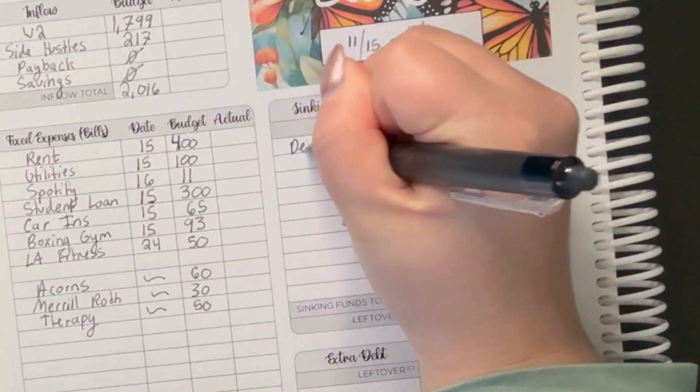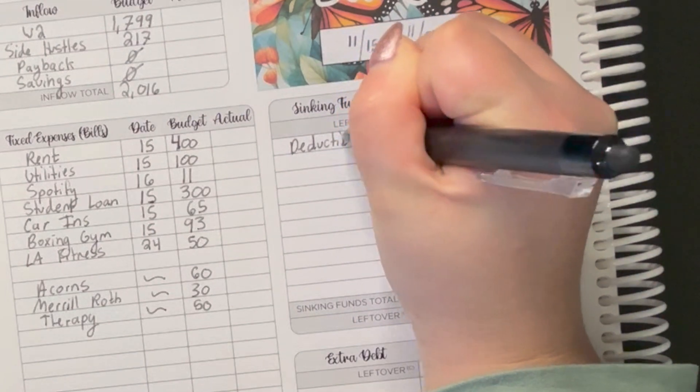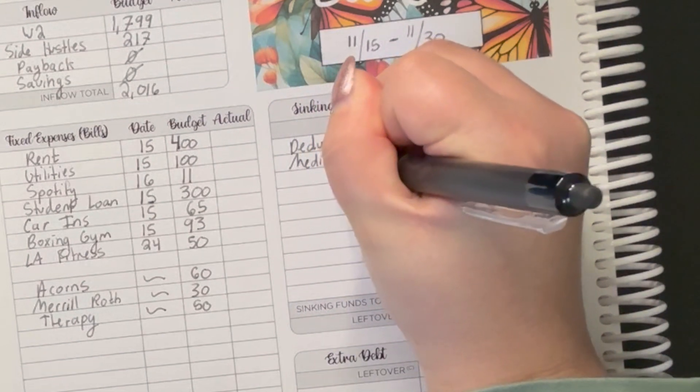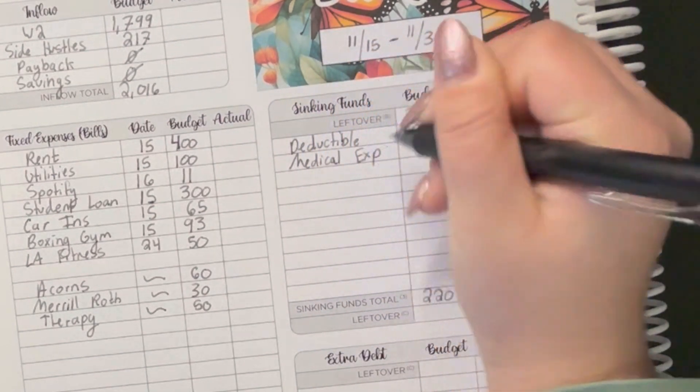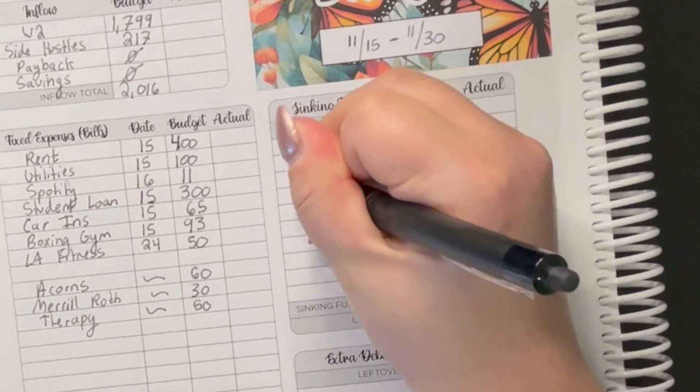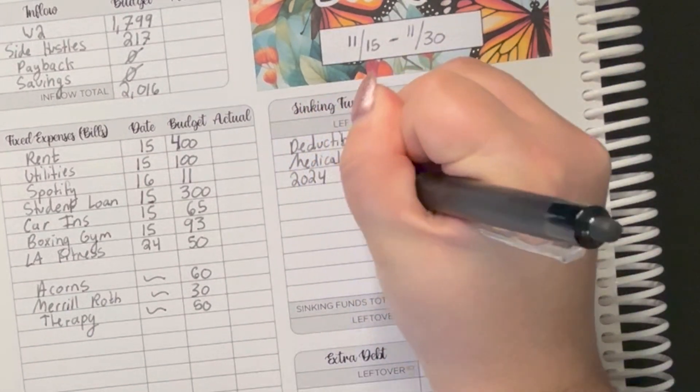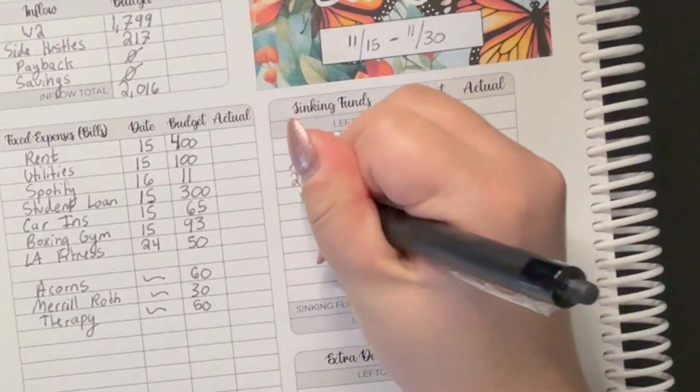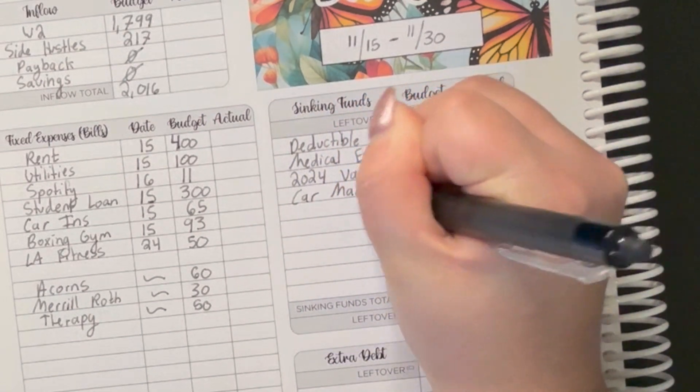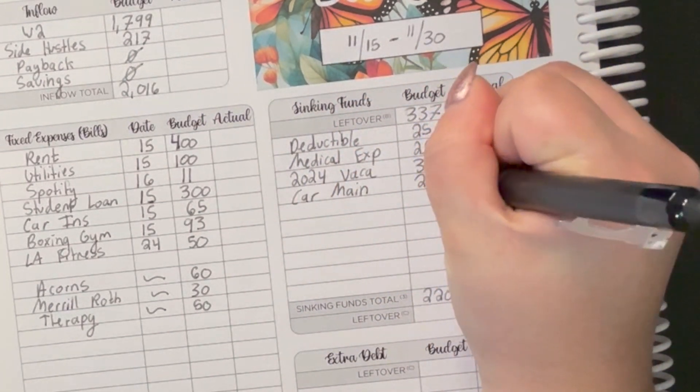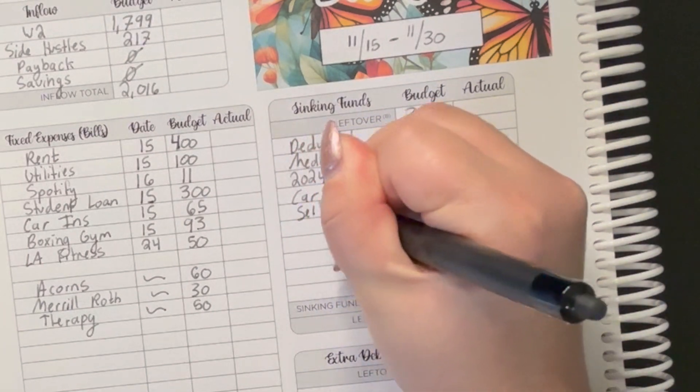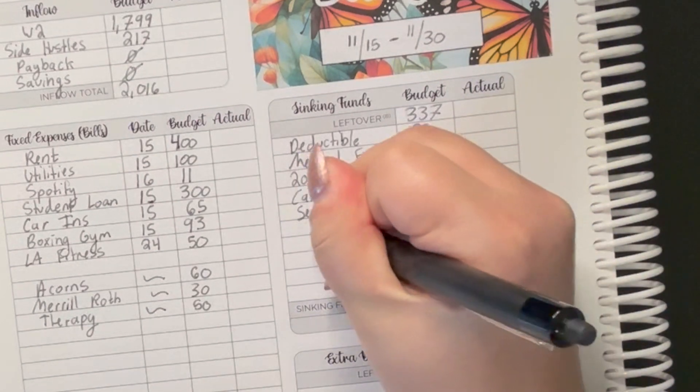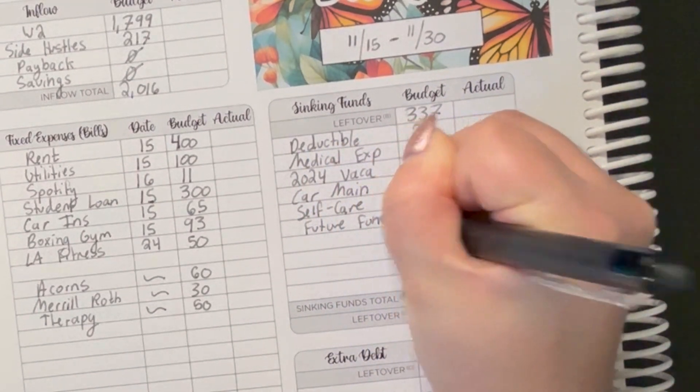So we're going to do deductible of $25. We're going to do medical expenses, also $25. Every paycheck we do 2024 vacay of $35. Soon we'll be starting a 2025 vacay fund. Car maintenance, we've got $25 for. Self-care, we've got $25 for as well.